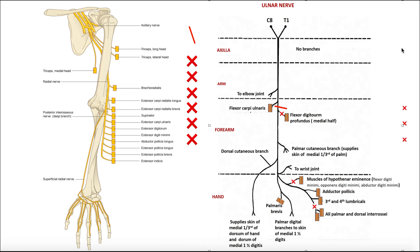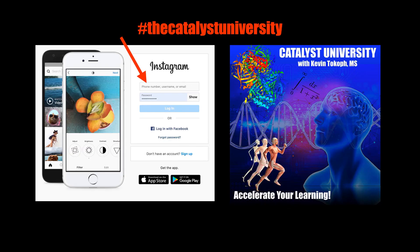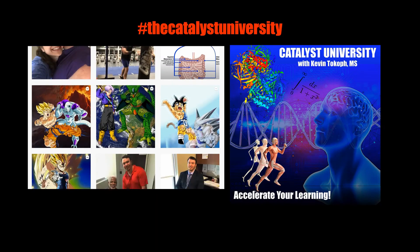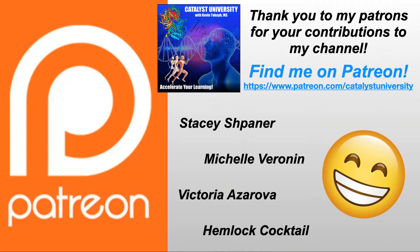Hopefully this video gave you a good understanding of how to use electromyography to deduce where nerve damage is when the damage is assumed to be distal to the elbow, so we don't have to use the brachial plexus. Thanks for tuning in. Please like, subscribe, and check out my Instagram for cool science content. And a big thank you to my patrons on Patreon for your contributions to my channel.